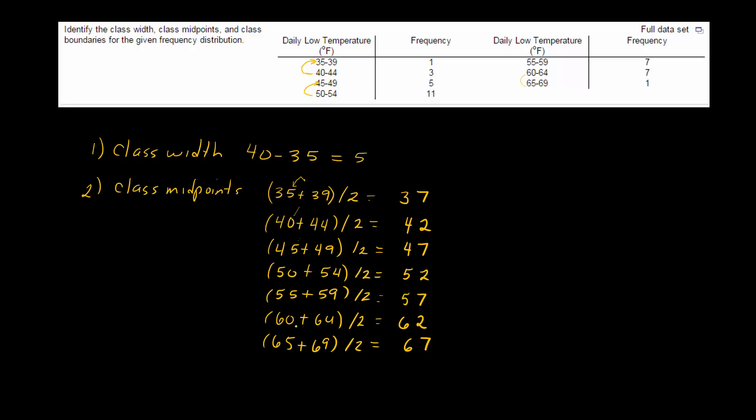And then it wants the class boundaries. Well, basically what the class boundaries are are the in-between values, and you just have to be careful that you actually start at the lower. So we do these by 0.5. So below 35 would be 34.5, and then I'm jumping from 39 to 40, so it would be 39.5.